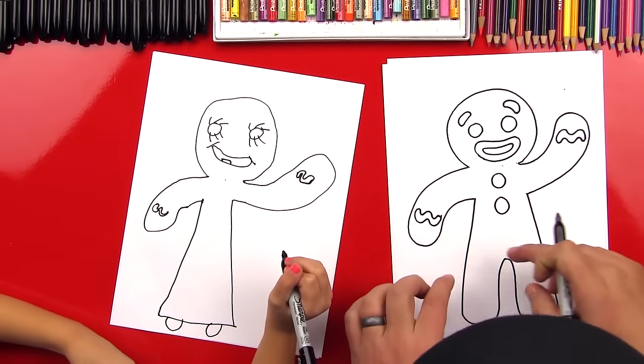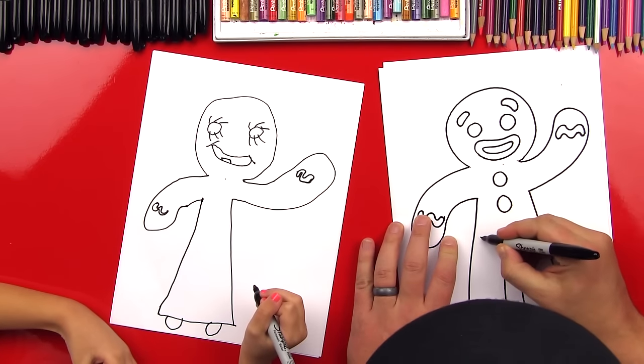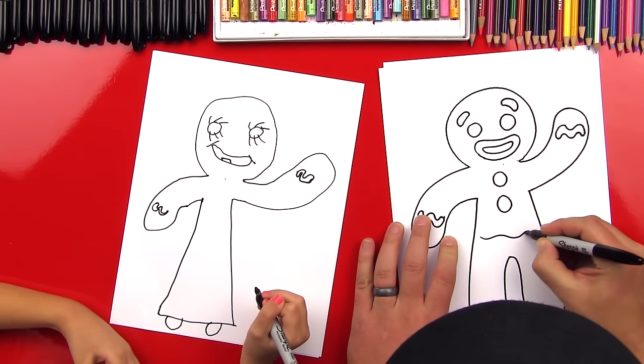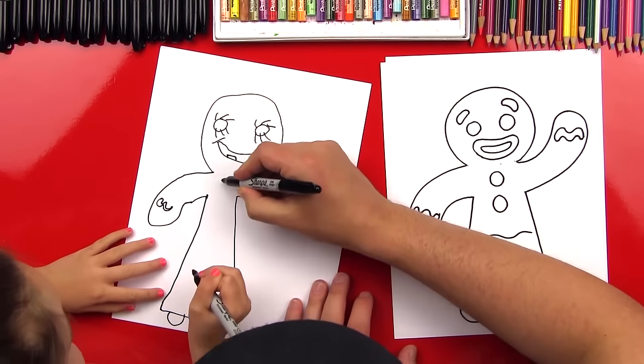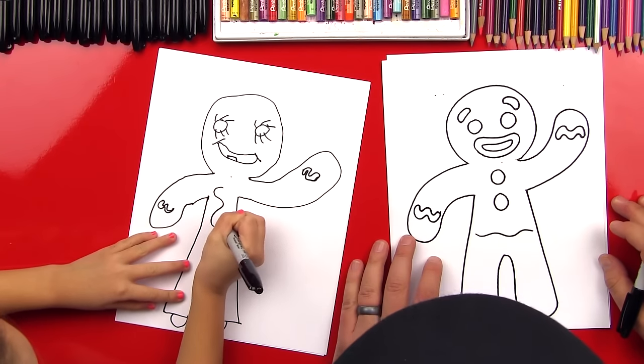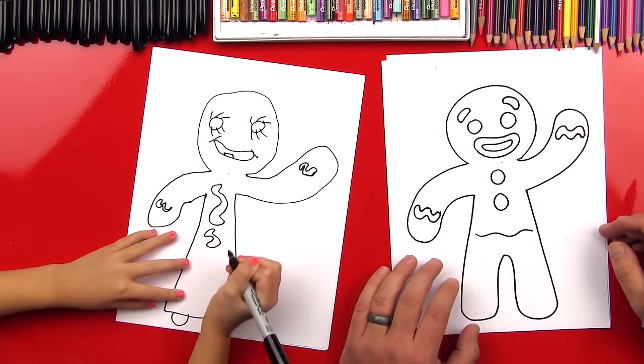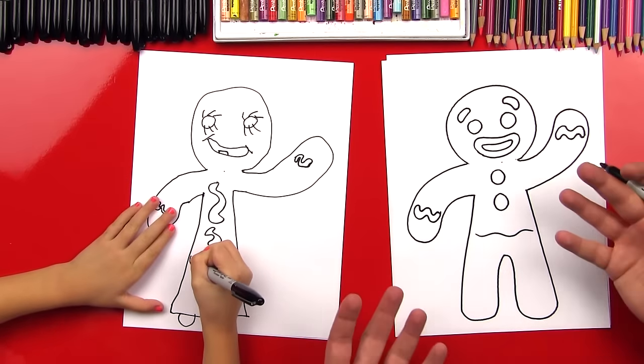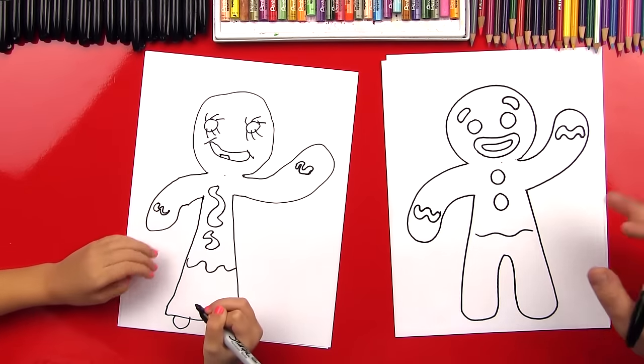Okay, now I'm gonna do a belt and you could do a little waistline too, so I'm gonna do a wavy line like this, just like we did on the arms. You can do it right here and you could do another one up here on her neck too. Oh good, I like that too. That's the fun part about this art activity, is that you could decorate your gingerbread person however you want.